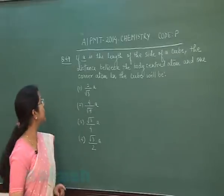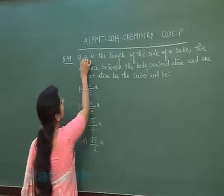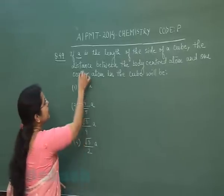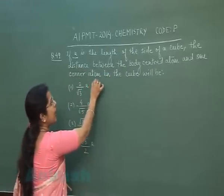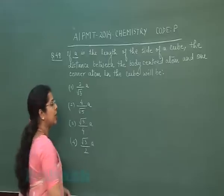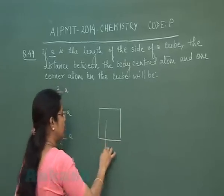Next question is question number 49: If 'a' is the length of the side of a cube, the distance between the body-centered atom and one corner atom in the cube will be? In this question, we have to imagine a perfect cube.